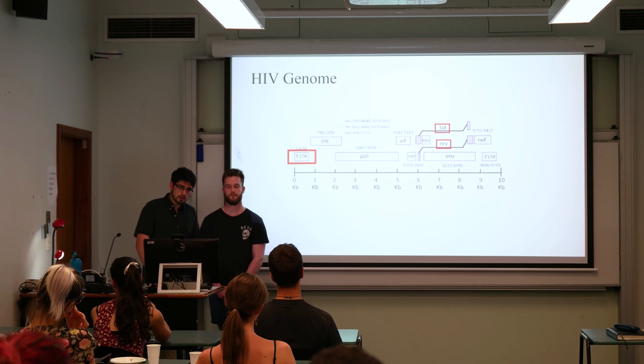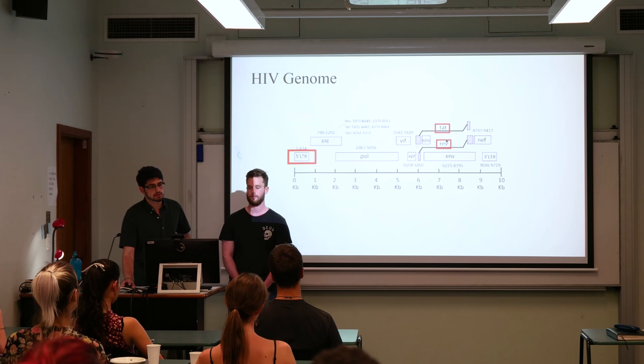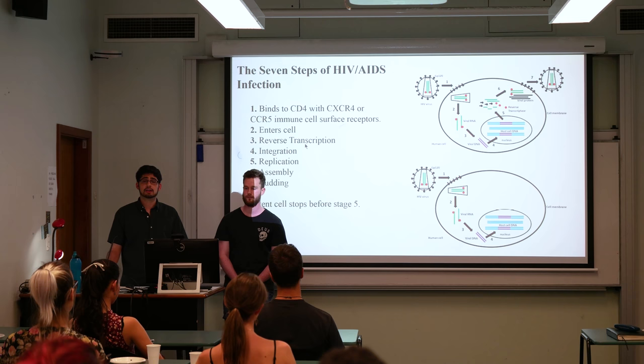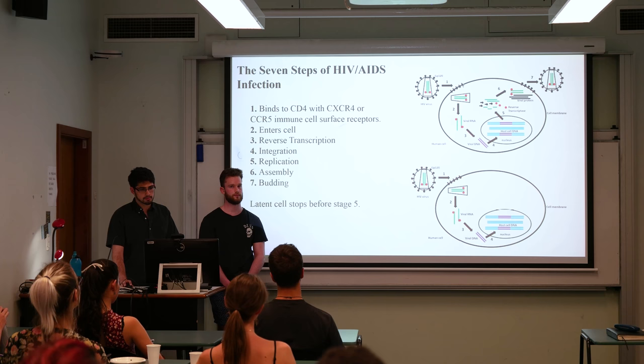The HIV genome consists of nine protein coding genes. Ones of interest in our presentation will be the TAT gene, the REV gene, and also the five prime long terminal repeat promoter. HIV infects cells via a seven-step process. Essentially, the HIV virus comes in and binds to the CD4 receptor, which is combined with a secondary receptor — either CXCR4 or CCR5.